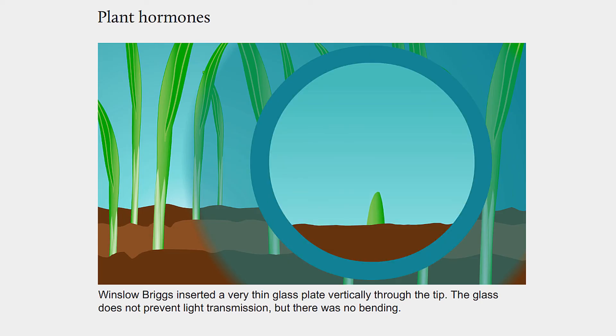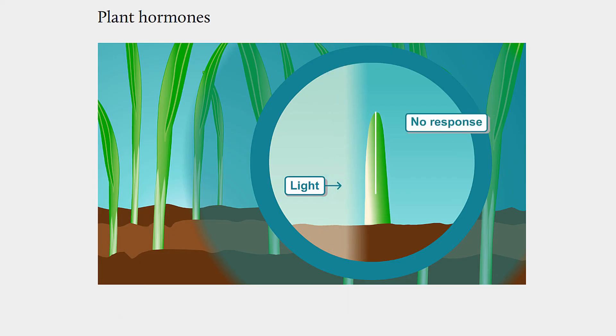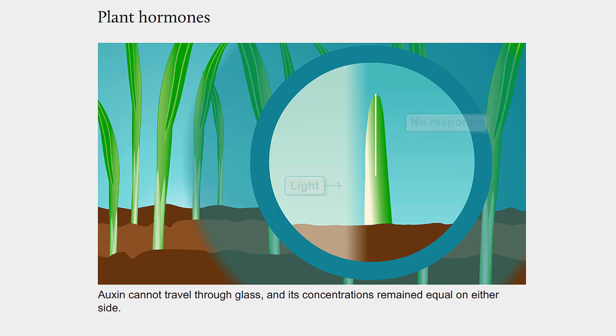Winslow Briggs inserted a very thin glass plate vertically through the tip. The glass does not prevent light transmission, but there was no bending. Auxin cannot travel through glass, and its concentrations remained equal on either side.